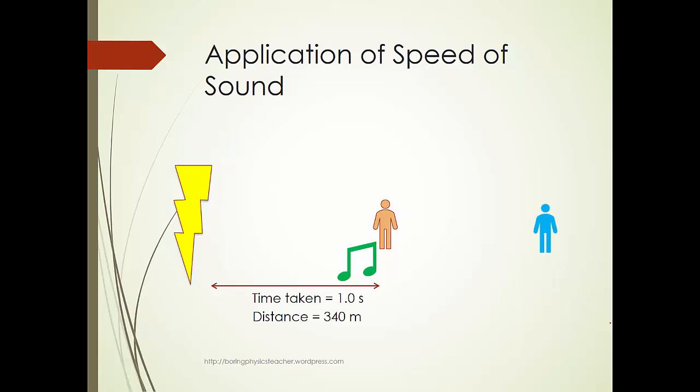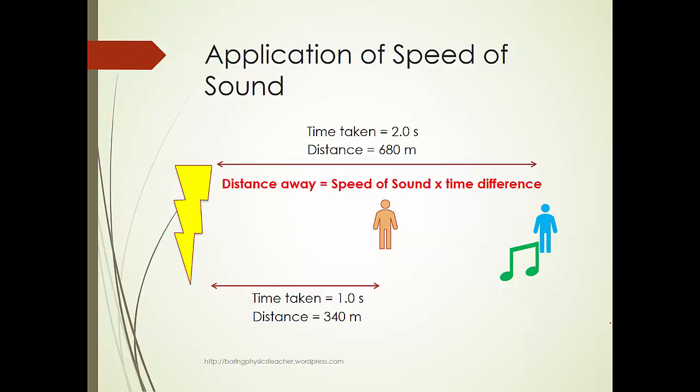So, if the time difference is 2 seconds, the location where the lightning struck is about 680 meters away. The greater the distance, the longer the time difference. But that is assuming that we know the speed of sound and it is more or less constant. In general, the distance away is equal to the speed of sound times the time difference.